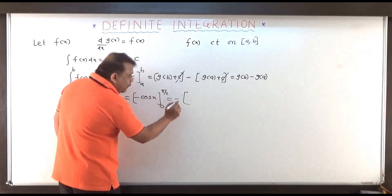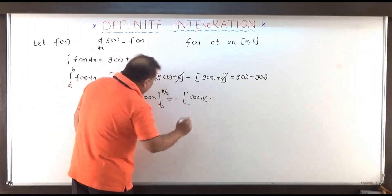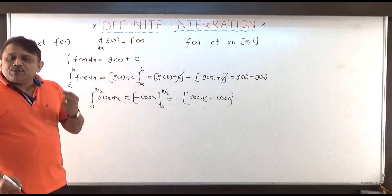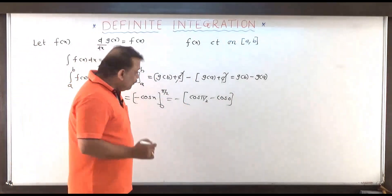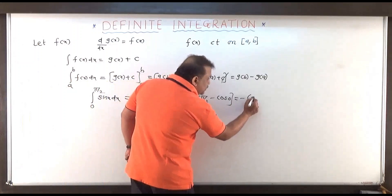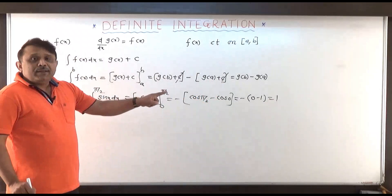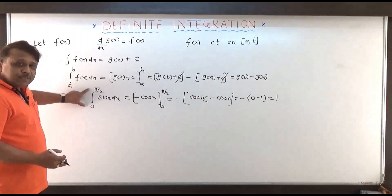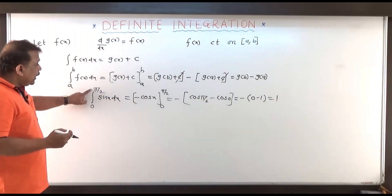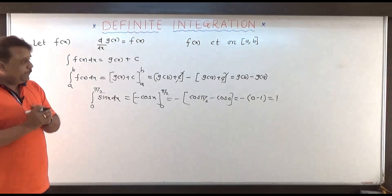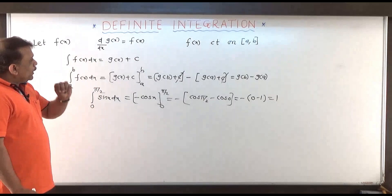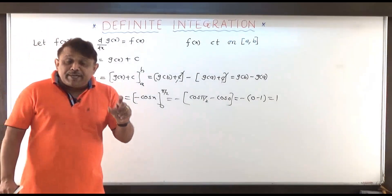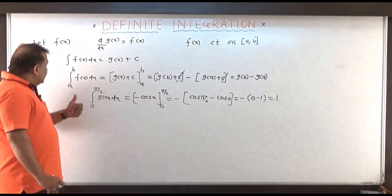The final answer is always upper limit minus lower limit. Pulling the minus sign out, I replace x by pi by 2 to get cos(pi/2), and then replace x by 0 to get cos(0). Now cos(pi/2) is 0 and cos(0) is 1, so we get minus bracket 0 minus 1, which is plus 1. So the value of this integration is 1 — a fixed number. Thus the integral from 0 to pi by 2 of sin x dx equals 1.